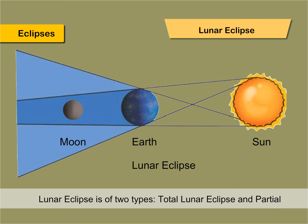Lunar Eclipse is of two types: Total Lunar Eclipse and Partial Lunar Eclipse. During a total lunar eclipse, the moon cannot be seen at all. During a partial lunar eclipse, the sun, earth and moon are not perfectly aligned in a straight line. Only a part of the moon can be seen.